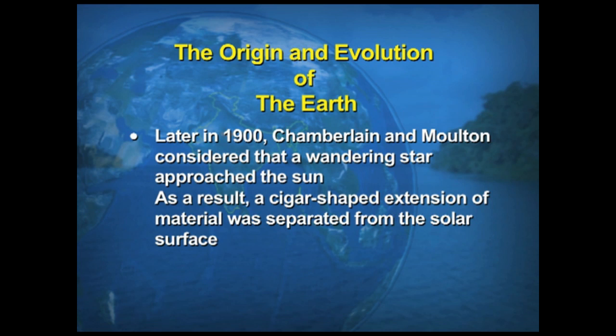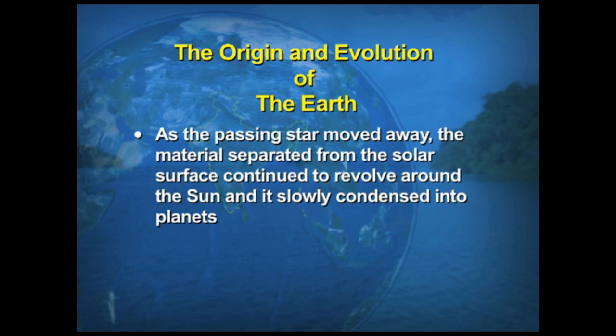As a wandering star approached the sun, a cigar-shaped extension of material was separated from the solar surface. As the passing star moved away, the material separated from the solar surface continued to revolve around the sun and slowly condensed into planets.